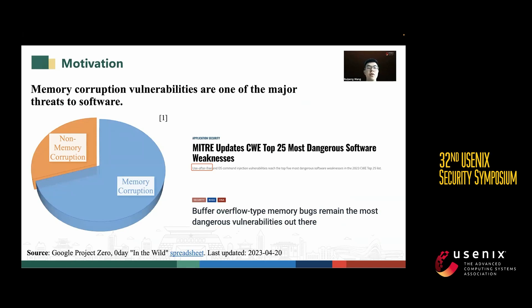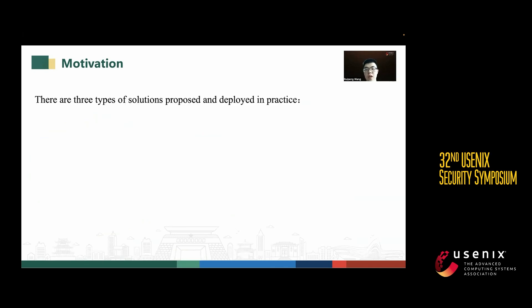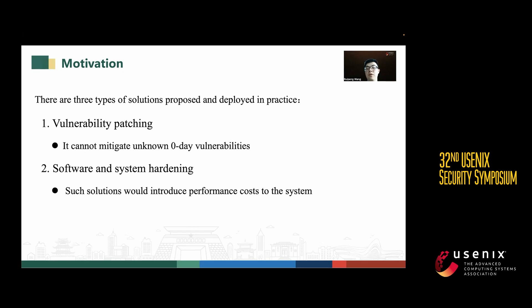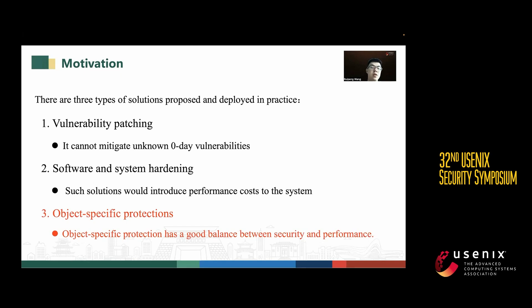Memory corruption vulnerabilities are one of the major threats to software, so how do we mitigate them? There are three types of solutions proposed and deployed in practice. The first is vulnerability patching — the most straightforward solution, but it cannot mitigate unknown zero-day vulnerabilities. The second is software and system hiding, such as CFI. This solution can mitigate unknown vulnerabilities but introduces performance cost to the system regardless of whether the system is vulnerable or not.